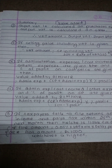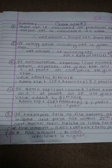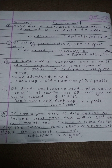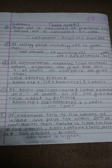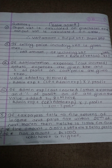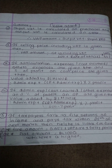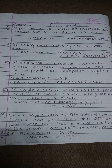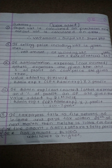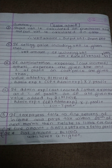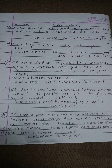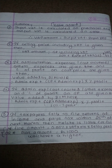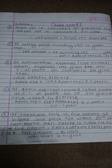Selling price including BAT formula: selling price including BAT divided by 100 plus rate of BAT at 13%. BAT is 13%. The components include expenses, cost, and profit.